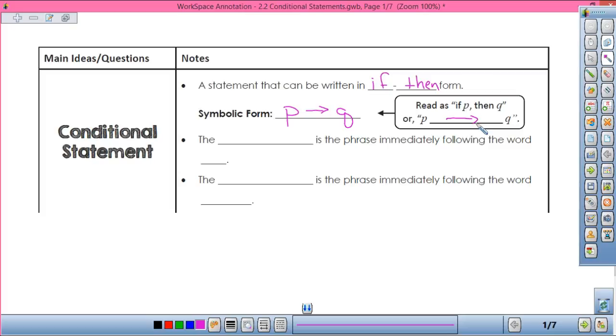A little arrow there. P is the hypothesis, and that's where we use the P. It is the phrase immediately following the word if. And the conclusion is the Q, and that immediately follows the word then. So the if part is the hypothesis, the then part is the conclusion.